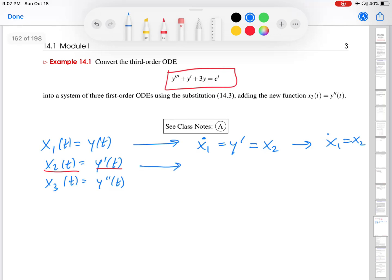Okay, so let's keep going here. The second equation, I'm going to take a derivative with respect to t of x2. That gives me y double prime. And then I go back up here and I see that y double prime is x3. So I'm going to use this over here and I get my second equation, x2 equals x3.